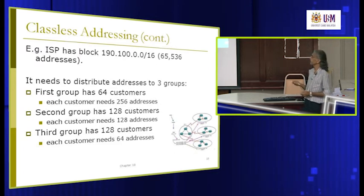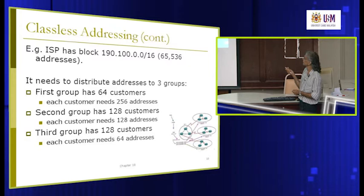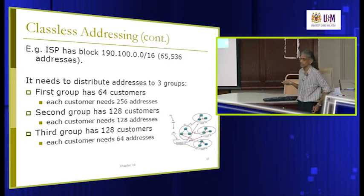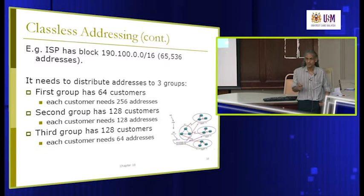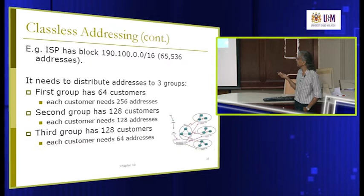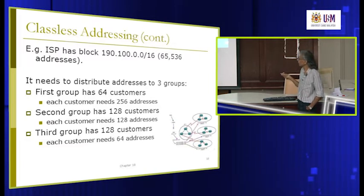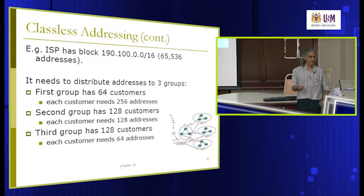Each local ISP is given a subnet from the original block. When organizations ask for IP addresses from the ISP, the ISP further divides their allocation into subnets and gives each organization the required number — if you request 10 I give you 16, if you request 8 I give you 8. Organizations themselves further subdivide into departments, and departments into groups, so there are many levels.